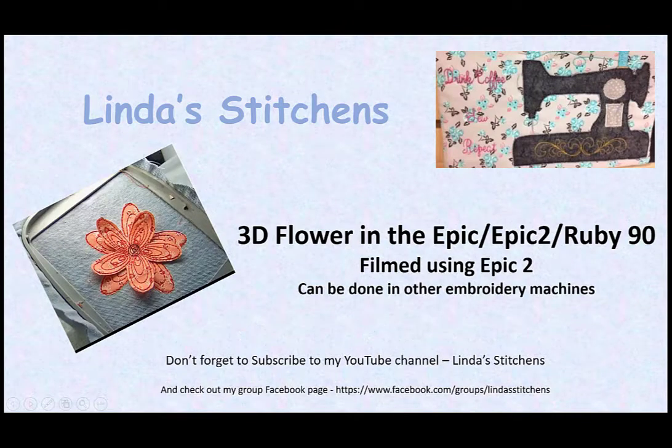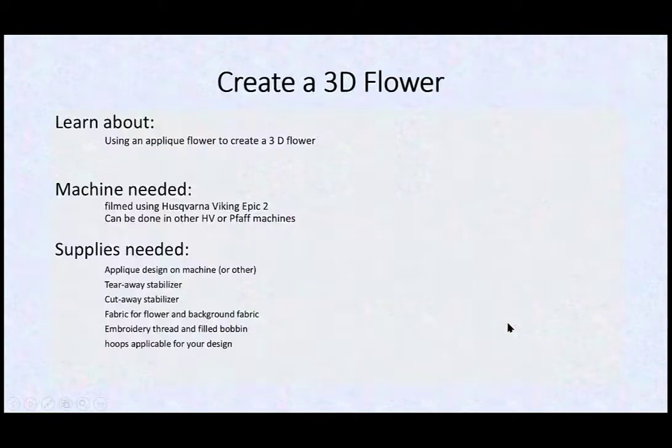Hi everyone, this is Linda and somebody had asked in my Husqvarna Viking Epic and Ruby 90 owners Facebook page about doing a 3D flower that I had done. So I'm going to share that here with you. It can be done, it was filmed in the Epic 2, but it can be done on other embroidery machines. The process is basically the same.